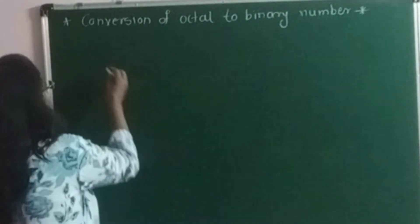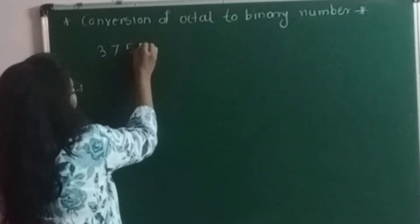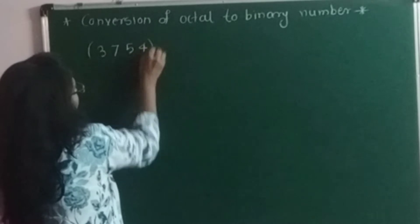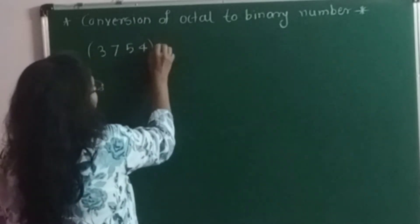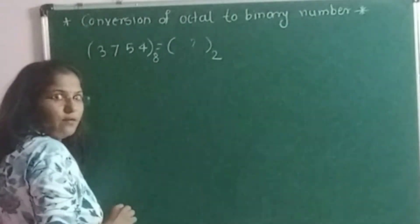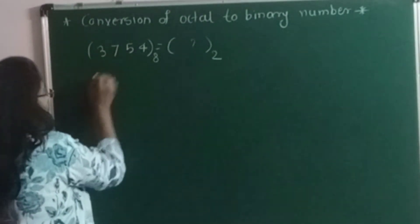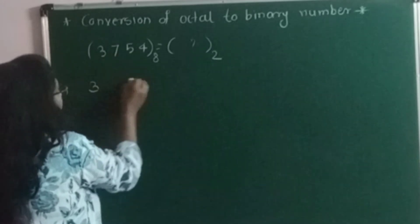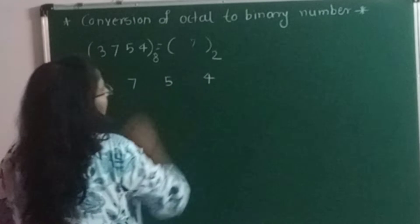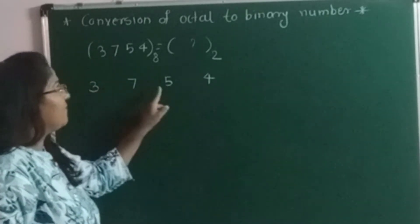Suppose the given octal number is 3754. This is the given octal number. I am going to convert this into binary. First we will write all the digits from the number: first is 3, second one is 7, next one is 5, and the last one is 4. So the given octal number is 3754.